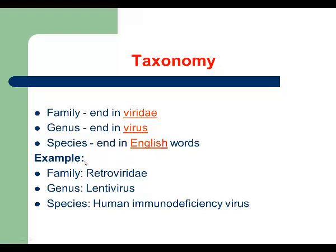For example, the family name is Retroviridae. The genus name of this virus is Lentivirus. And finally, the species name is Human Immunodeficiency Virus, or HIV. Very often, family names are converted into English — for example, Retroviridae are called retroviruses.